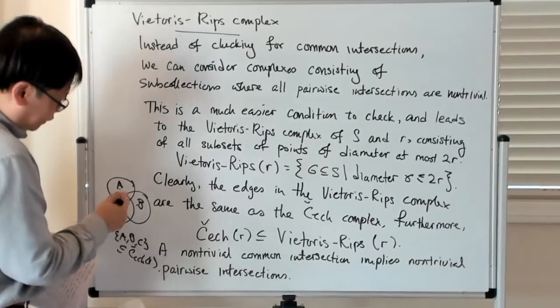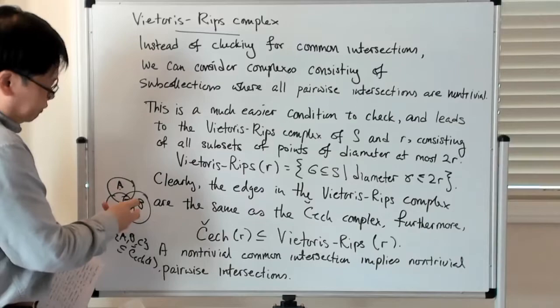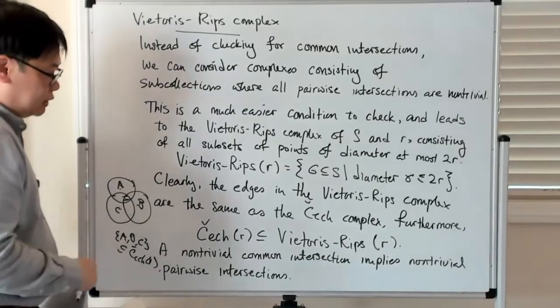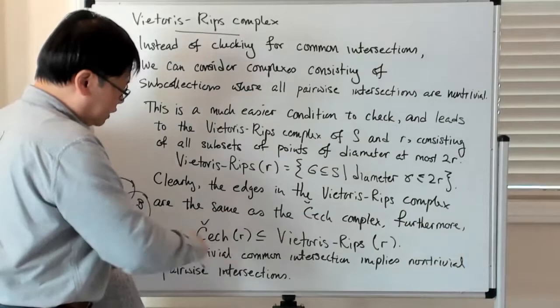For A, B, C to be in the Čech complex of radius R implies that the balls of radius R centered at points A, B, and C have a non-trivial intersection here. But if that is true, then clearly the pairwise intersections of balls of radius R centered at A and B, or A and C, or B and C will also be non-trivial. And of course, that sort of easier to satisfy condition is the condition for it, for that abstract simplex if you will, to be in the Vietoris-Rips complex.